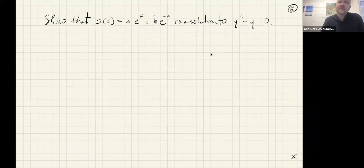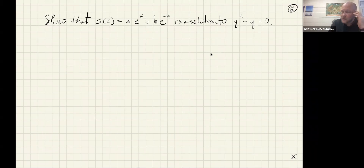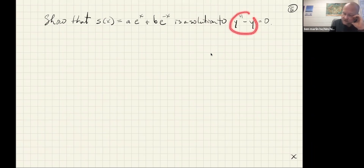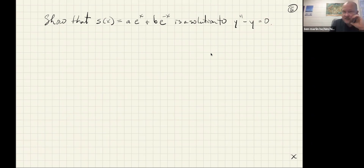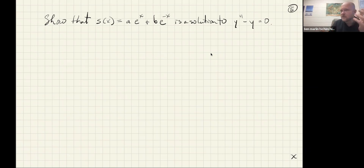This problem asks us to show that the function we have is a solution to the differential equation. These sorts of problems are meant to be easy because they give you an answer and just ask you to verify it's correct. All you have to do is calculate the left-hand side and show that it equals the right-hand side. We're going to have to calculate s double prime, with s of x equaling a e to the x plus b e to the minus x — thinking of plugging s in for y, much like you plug things in with the chain rule.